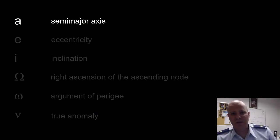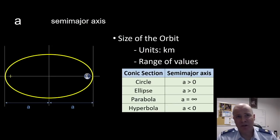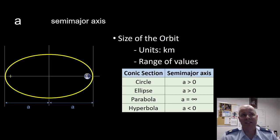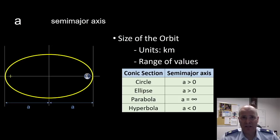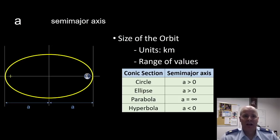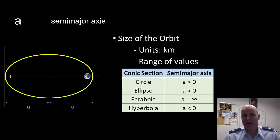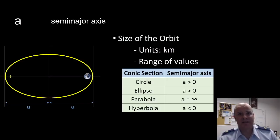First, let's talk about the semi-major axis. The semi-major axis is half of the major, or long axis, of our orbit. It's the size of our orbit, given in units of kilometers, and it can have a range of values. If we have a circle or an ellipse, it's a positive value. If we have a parabola, it's equal to infinity. And for a hyperbola, it's actually less than zero, or a negative number.